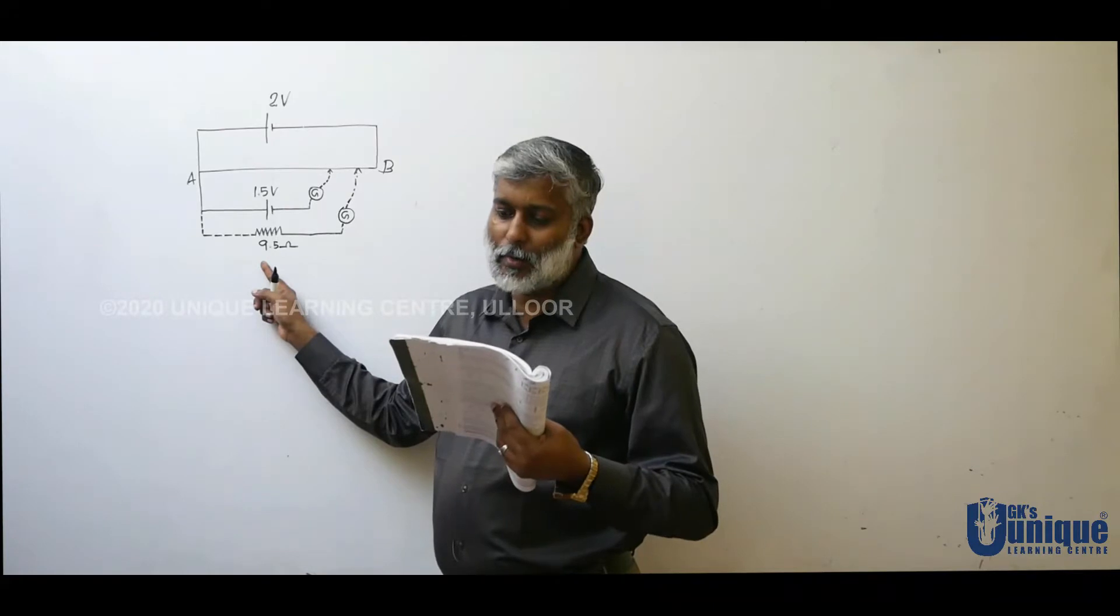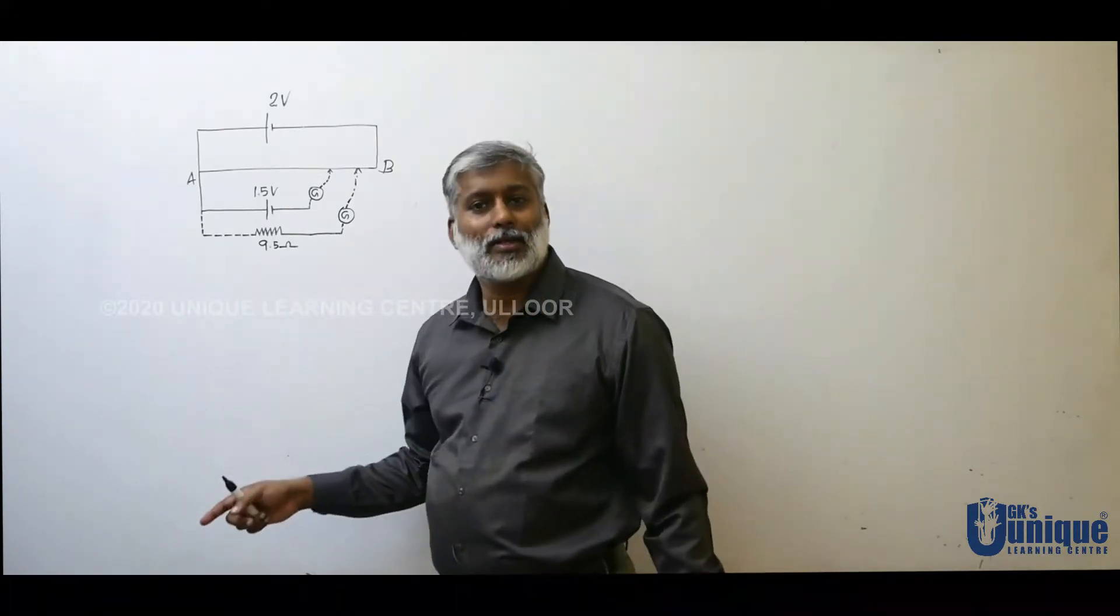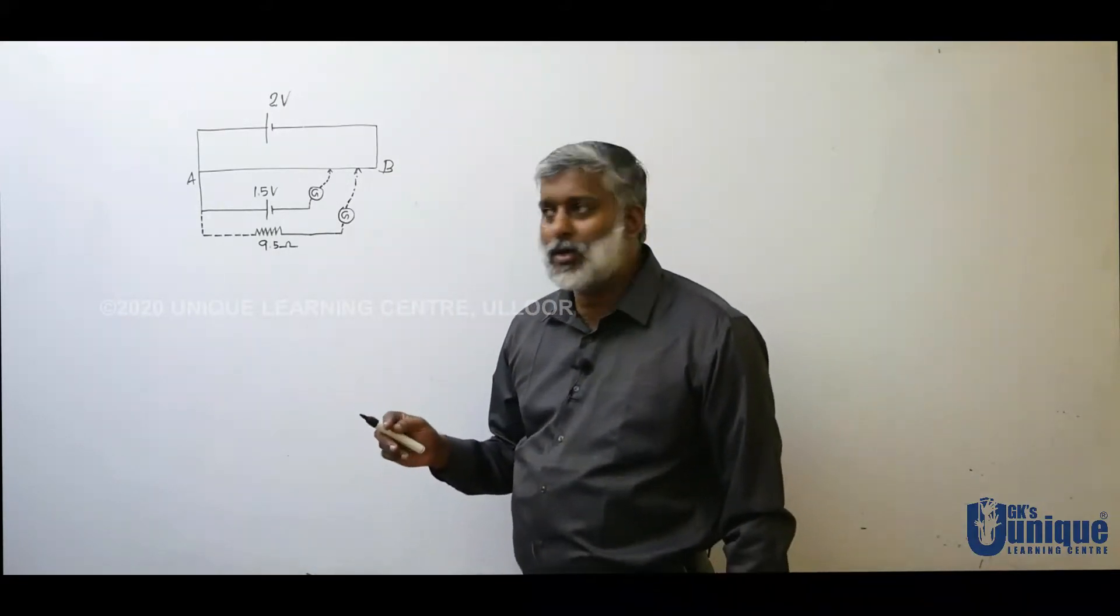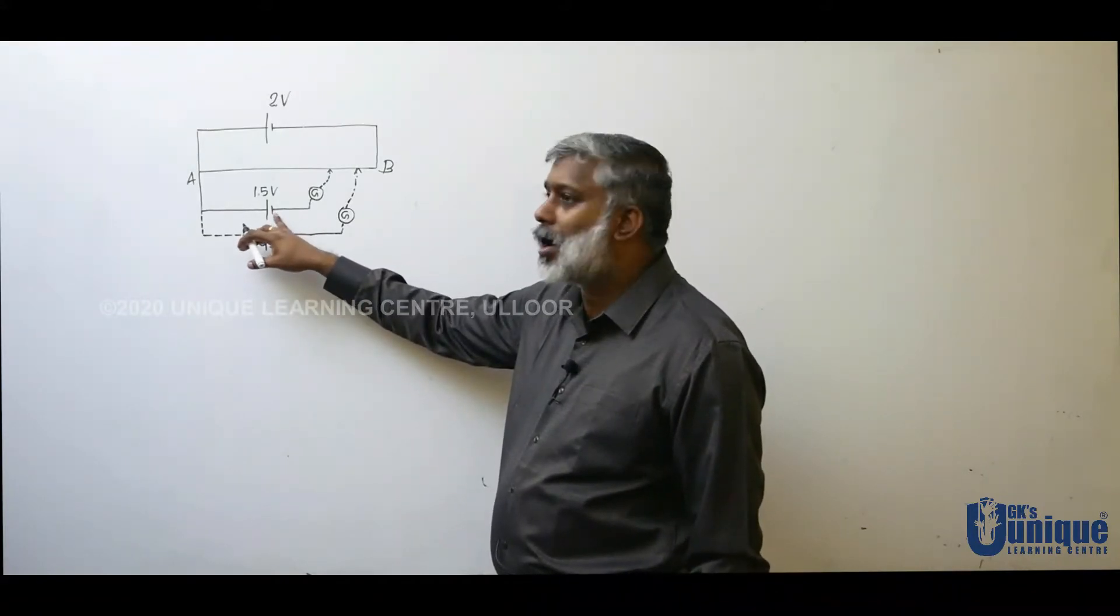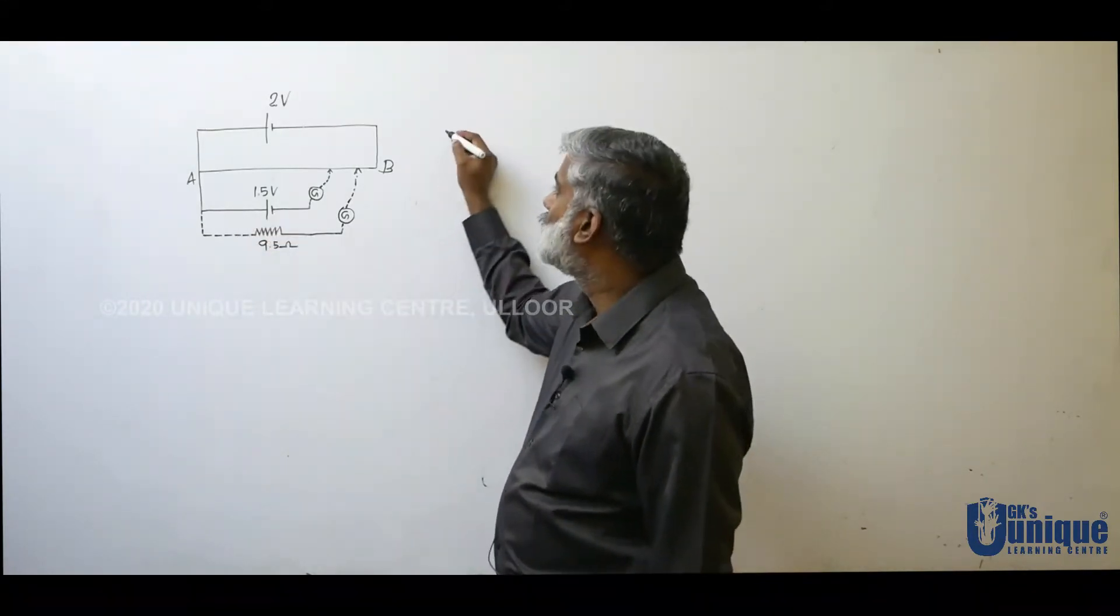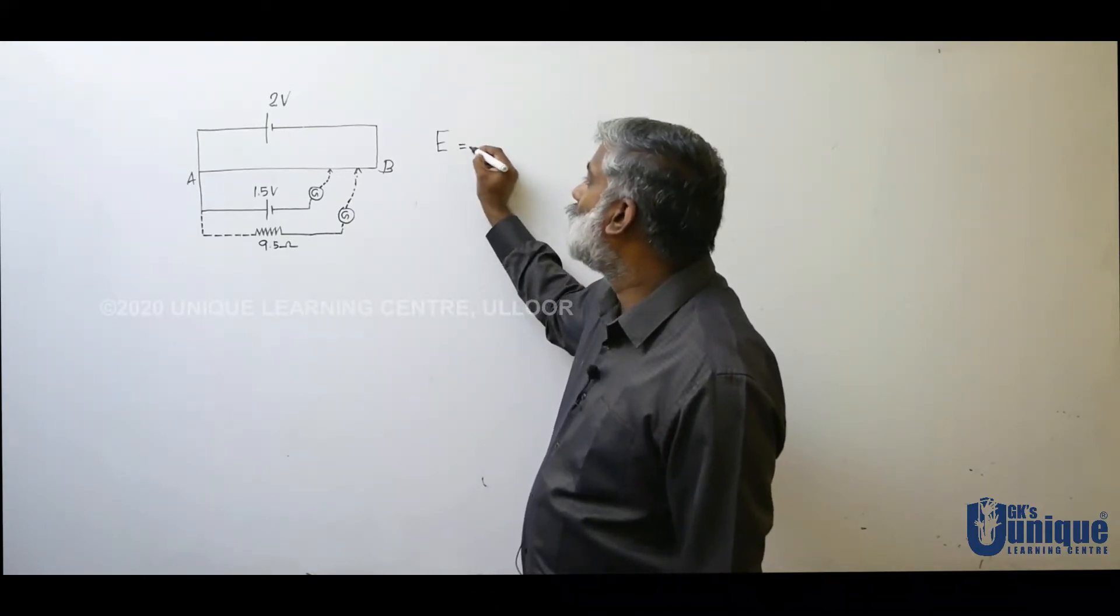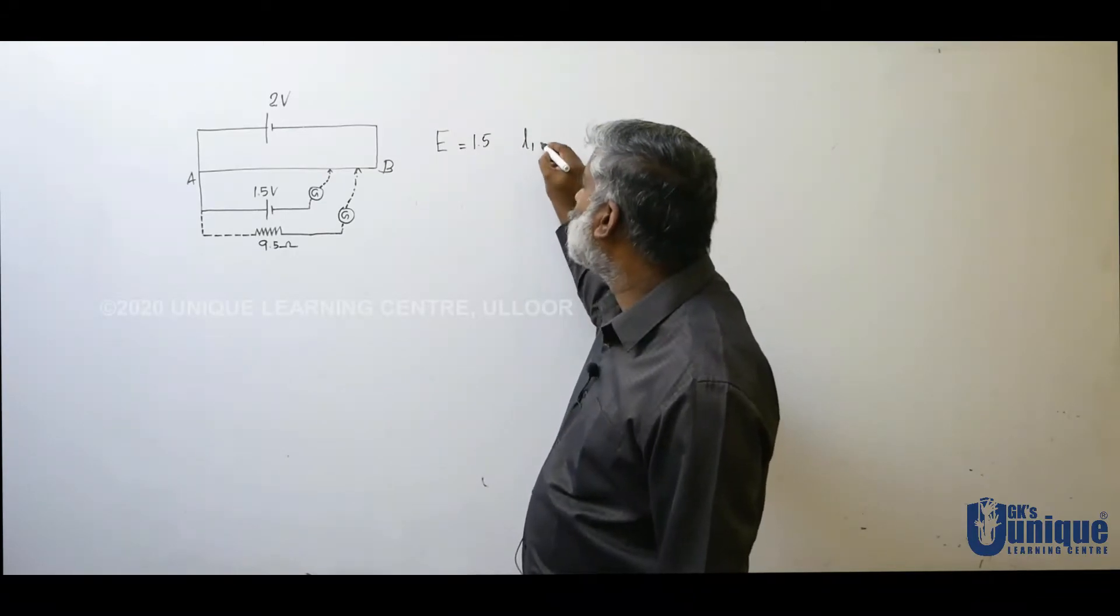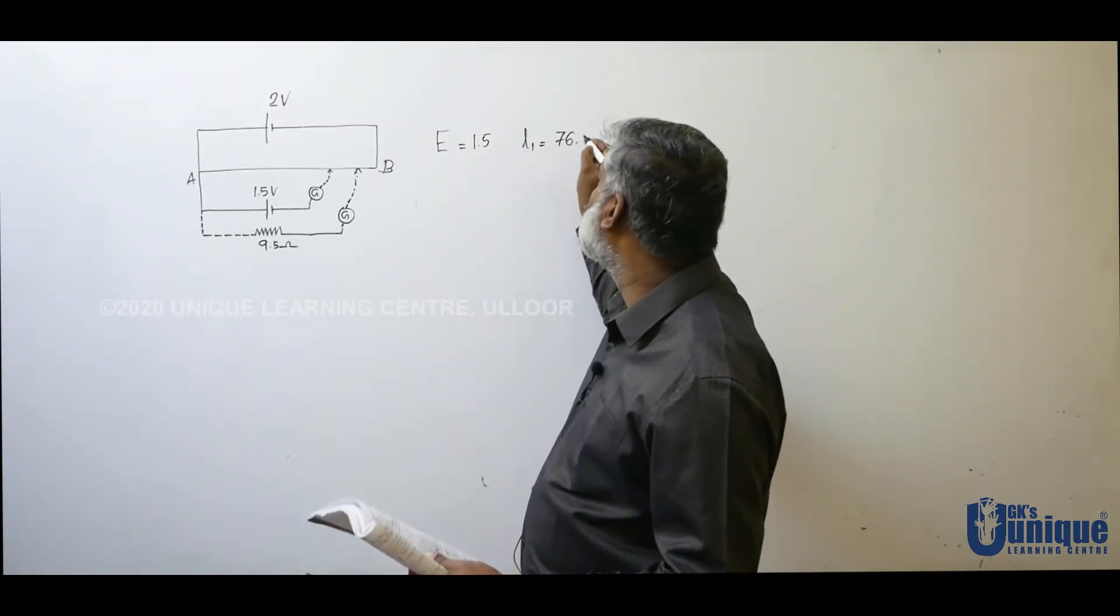Balance point becomes 64.8. Determine internal resistance straight at the experiment in the second part. That is secondary cell in the circuit balancing length. Secondary cell in the EMF is 1.5. That is the balancing length 76.3 cm.